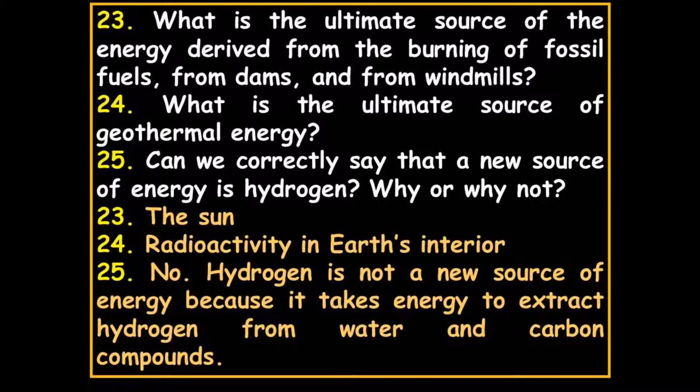What is the ultimate source of energy derived from burning fossil fuels, dams, and windmills? The Sun. What about geothermal energy? People see molten rock and wonder where it comes from — it's not because the Earth hasn't hardened yet. Radioactivity gives off tremendous amounts of energy, like an atomic bomb exploding. Geothermal energy comes from radioactivity.